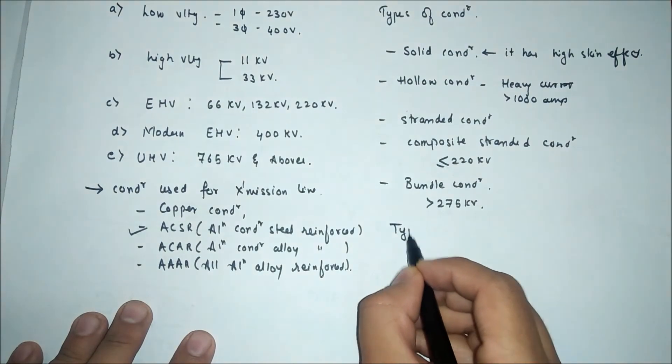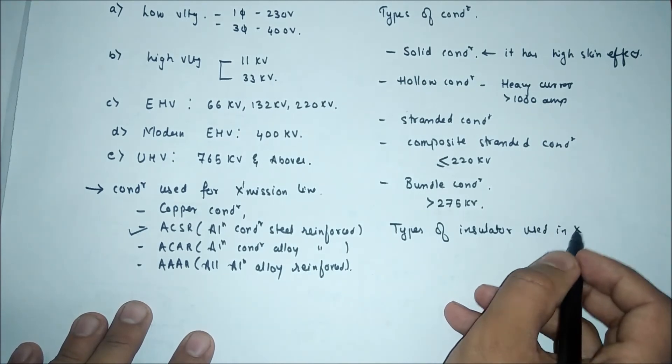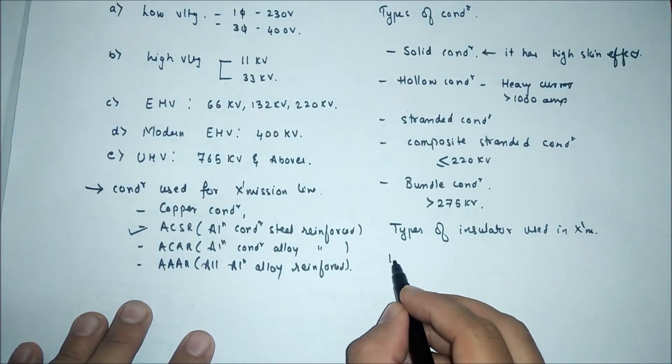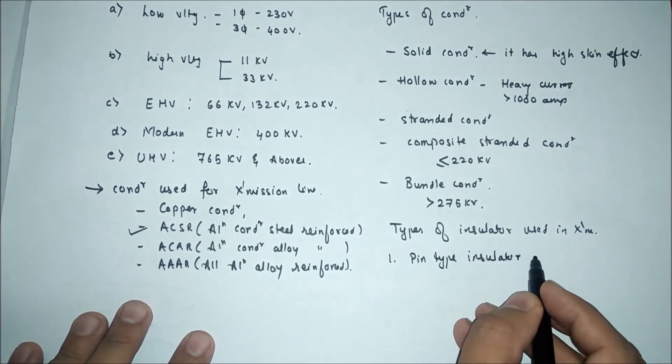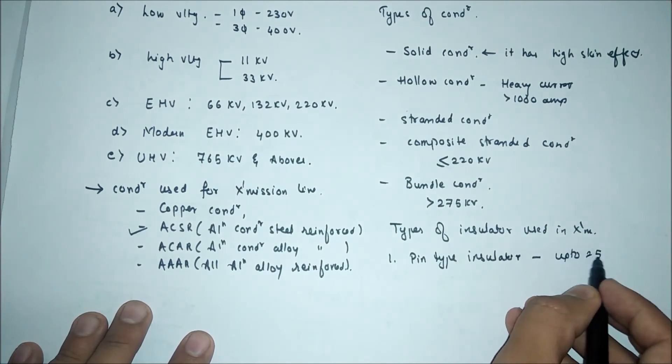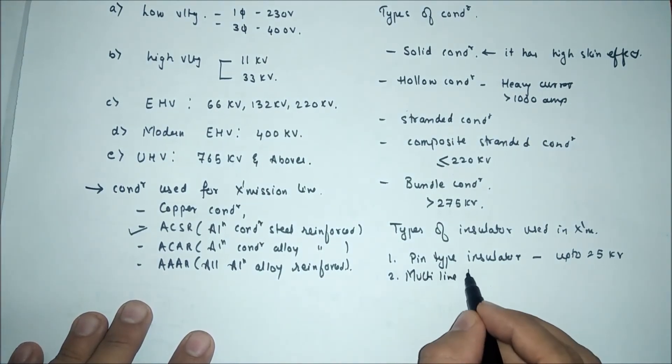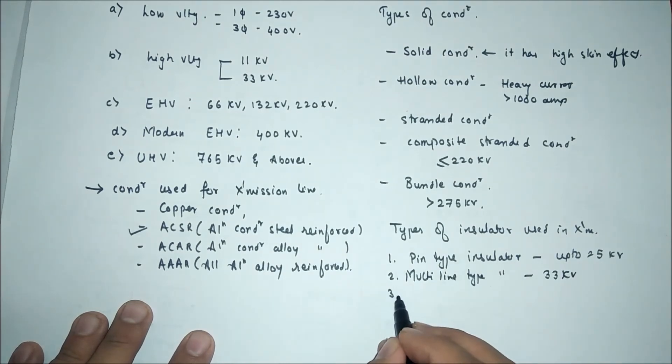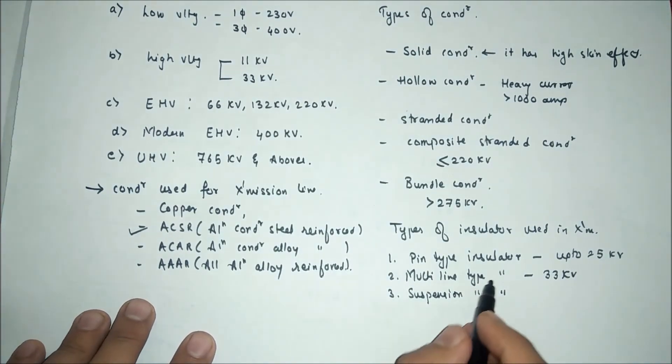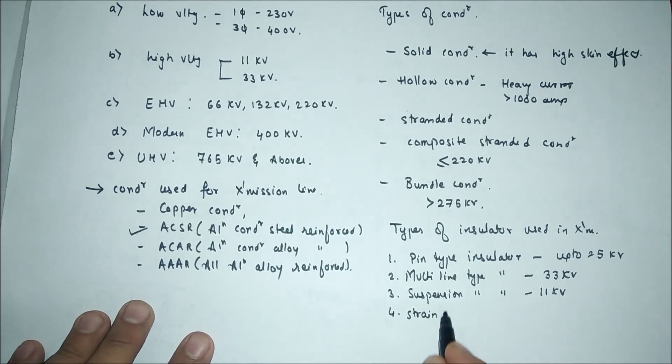We will see the types of insulator used in transmission line. First one is pin type insulator which operates up to 25KV. Second one is multi line type insulator which operates up to 33KV. Third one is suspension type insulator which operates up to 11KV. Fourth one is strain type insulator.